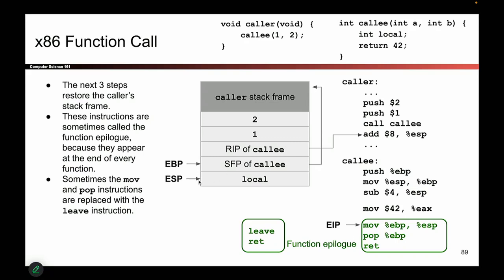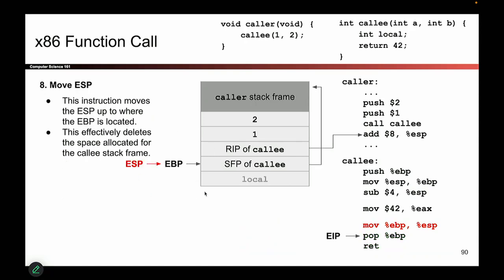The epilogue has three steps corresponding to putting these three registers back. The first thing is ESP. Remember when we moved ESP down to make a new stack frame? I don't need that stack frame anymore — callee is all done. So I take ESP and move it back up to wherever EBP is. These two registers now point at the same address. Basically I've cleared out the old stack frame — all this stuff is now below ESP in the void. We don't care about it; it doesn't exist anymore.